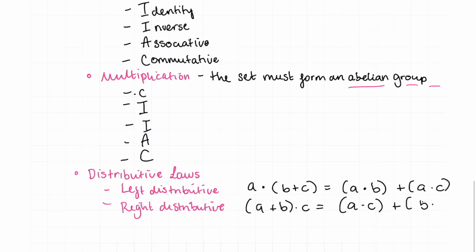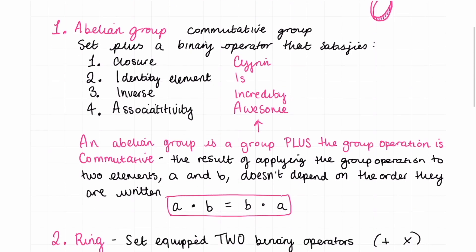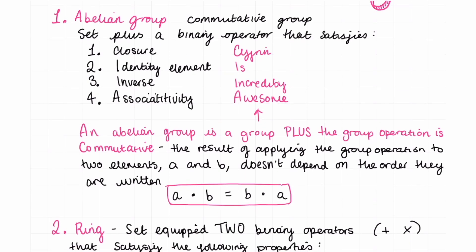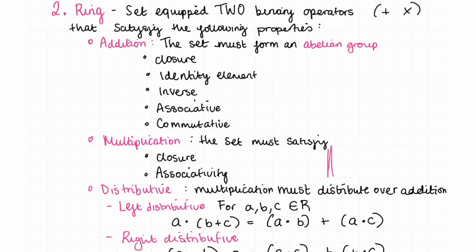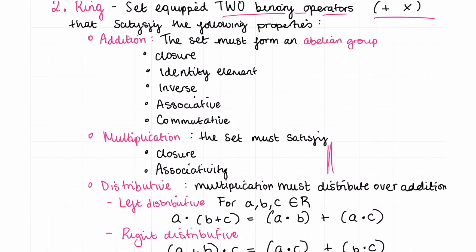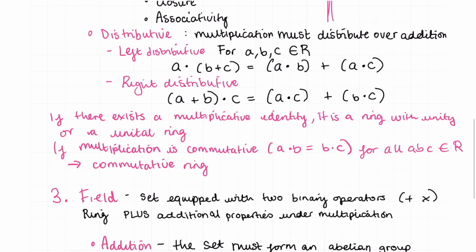That was a quick video to take you through the algebraic structures you might see. To recap: an abelian group is a commutative group — a group where the operator must also be commutative, so the result doesn't depend on the order the elements are written. A ring is a set equipped with two binary operators, usually addition and multiplication. Under addition it must form an abelian group; under multiplication all it needs is closure and associativity, and it must also be left and right distributive.